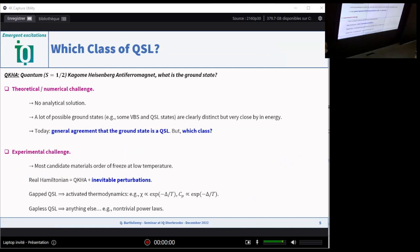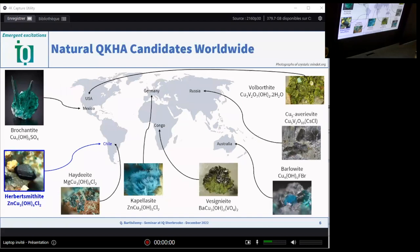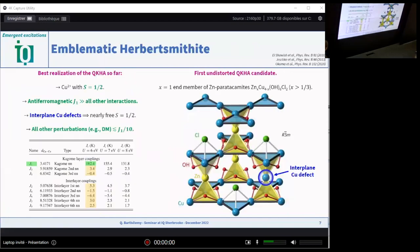It is also a difficult problem on the experimental side because most of the candidate materials are real materials and they include some perturbations that are inevitable and they often induce magnetic freezing or ordering at low temperature. Herbertsmithite is one of the only exceptions. It's quite impressive to see that all the candidate materials we have today are found as minerals in nature. They are beautiful. I put a few here. And among all these materials, Herbertsmithite really is an emblematic compound because it has a perfect Kagome geometry. All the others, or most of the others, include some distortions of the Kagome lattice, and this is problematic to obtain a quantum spin liquid ground state.